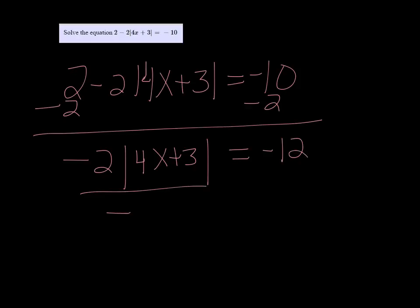Then divide both sides by negative 2. And I just get the absolute value of 4x plus 3 equals 6.